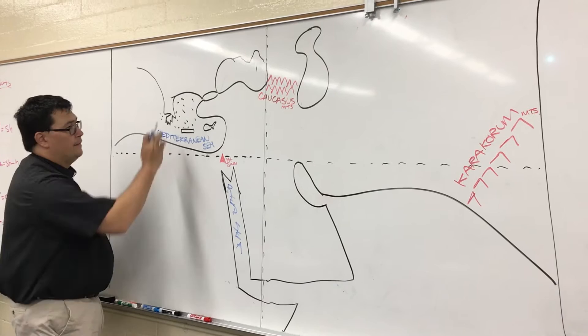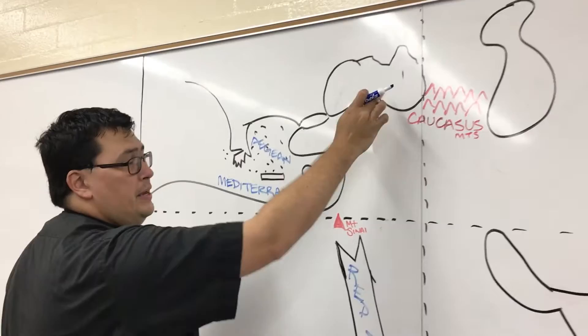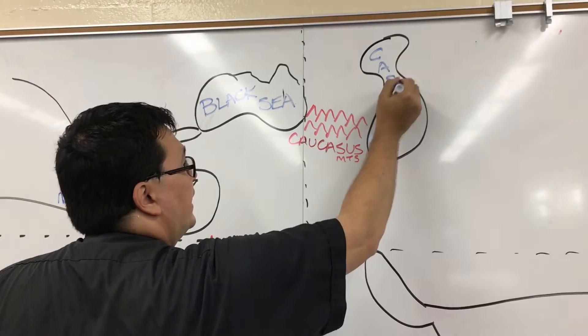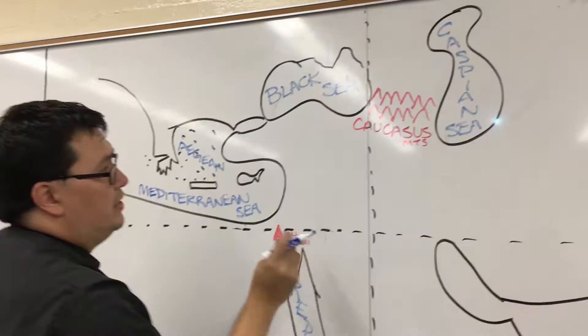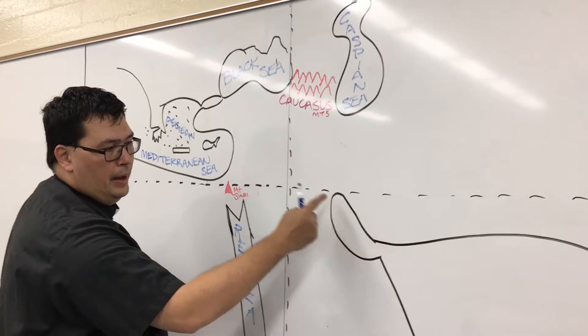And now we have to go learn our ABCs. A is for Aegean, A-E-G-E-A-N, the Aegean Sea. This is where all these little islands are. A, B is for the Black Sea. A, B, and then C over here is the Caspian. So the three seas here. A, B, C. Aegean, Black, and Caspian.